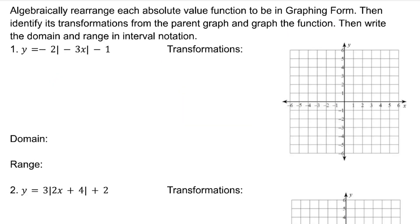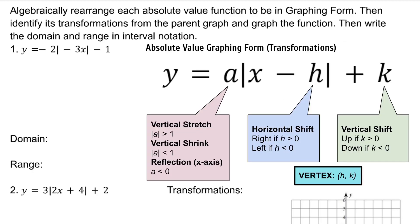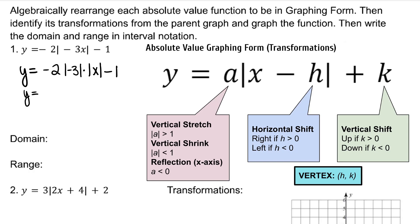What is the problem with our first example? X has a coefficient. The coefficient of X needs to be 1 in order for the function to be in graphing form. So how do I get rid of this negative 3? The absolute value of a product can be the product of each term's absolute value — meaning I can rewrite the absolute value of negative 3x as absolute value of negative 3 times absolute value of x.